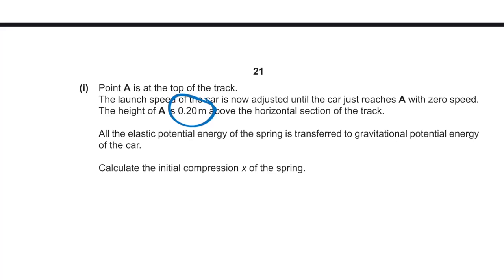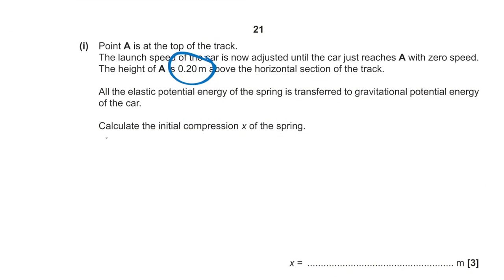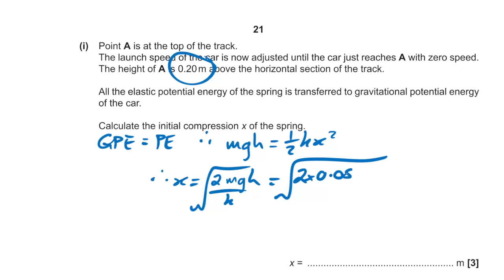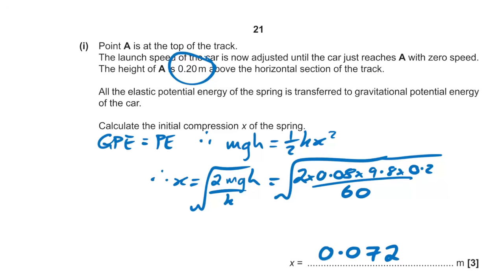The car is launched to reach point A with zero speed, height 0.2 m. All elastic PE converts to gravitational PE. Setting ½kx² = mgh and solving for x: x = √(2mgh/k) = √(2 × 0.08 × 9.8 × 0.2 / 60) ≈ 0.072 m.